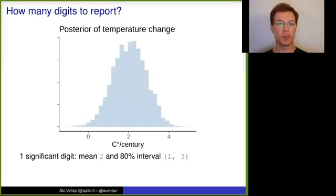If you think that this 80 percentage interval is too short, you could also then choose that kind of quantiles that you can report with one digit, but with a longer interval. And now we get the probability that the temperature increase is between 0 and 4 degrees per century is 99 percentage.